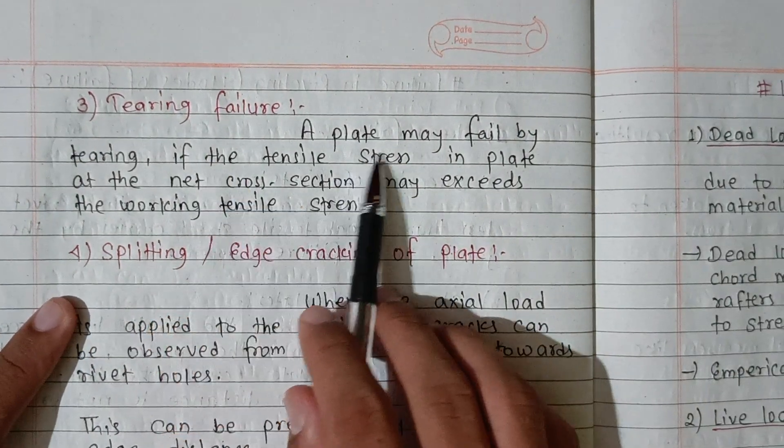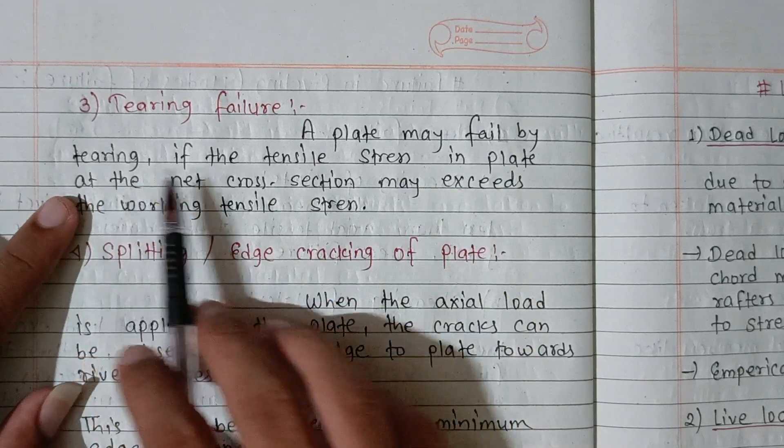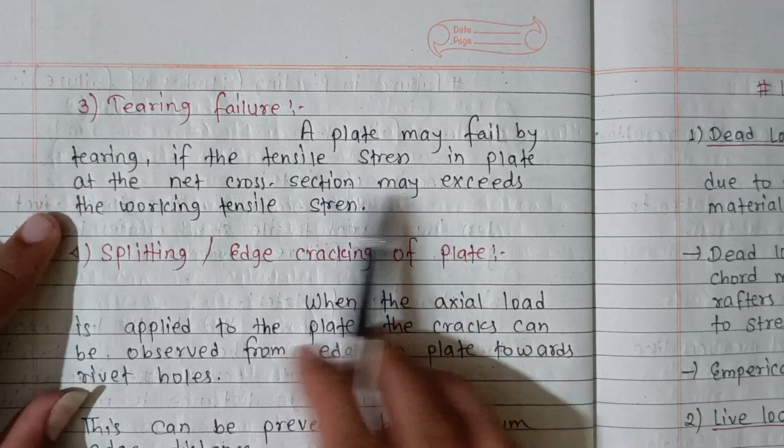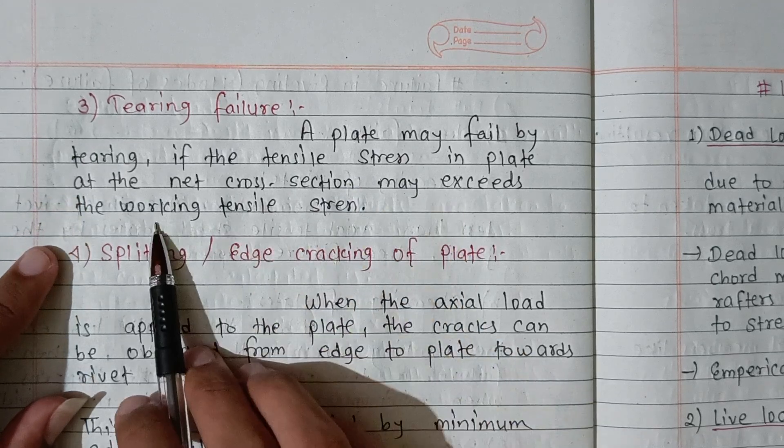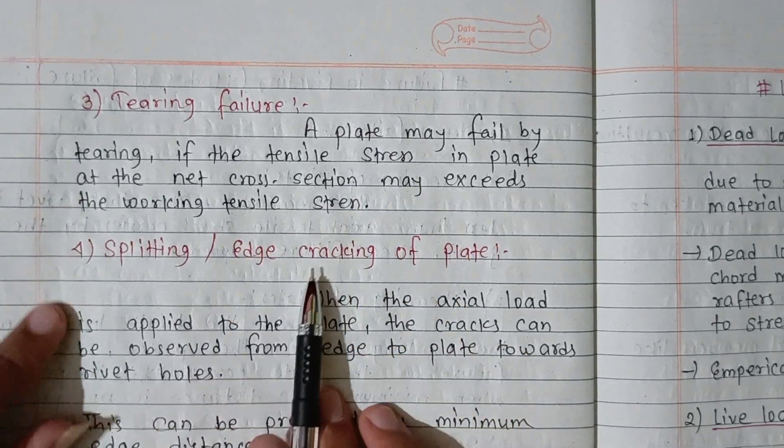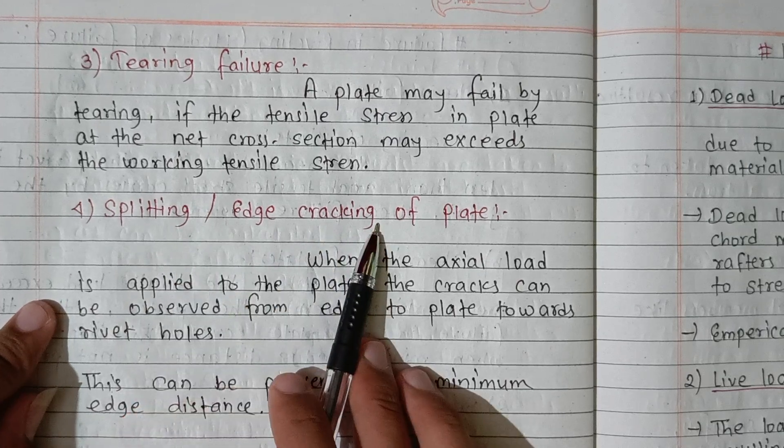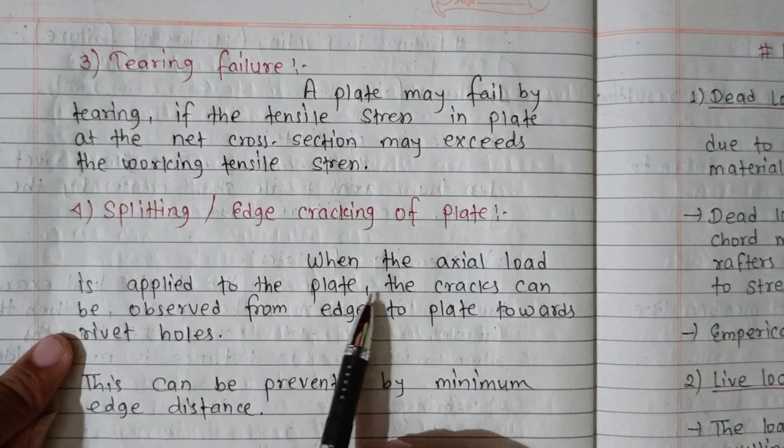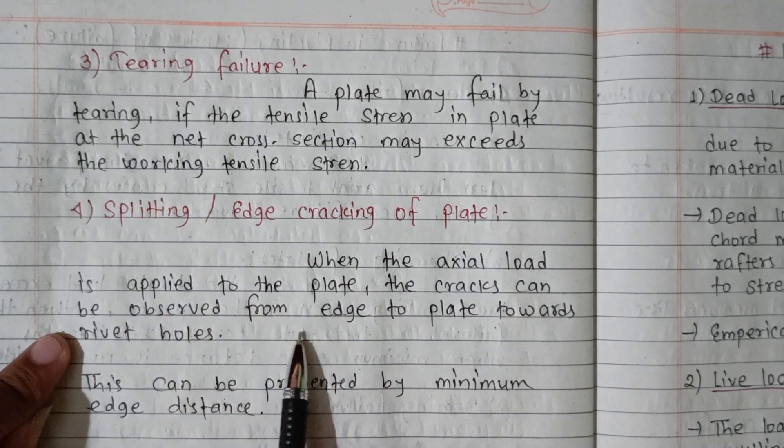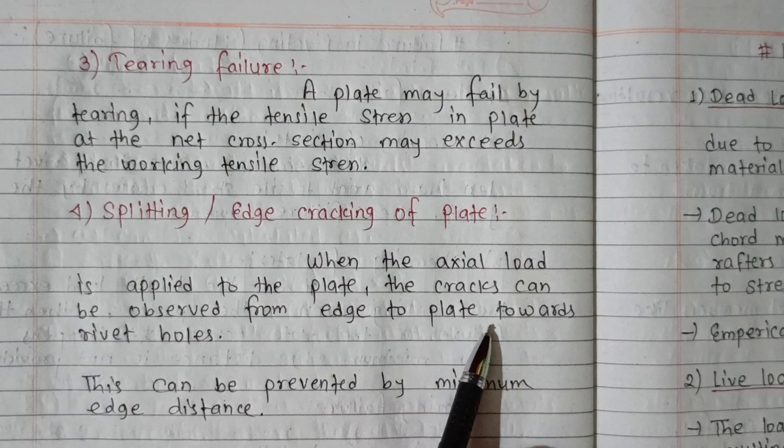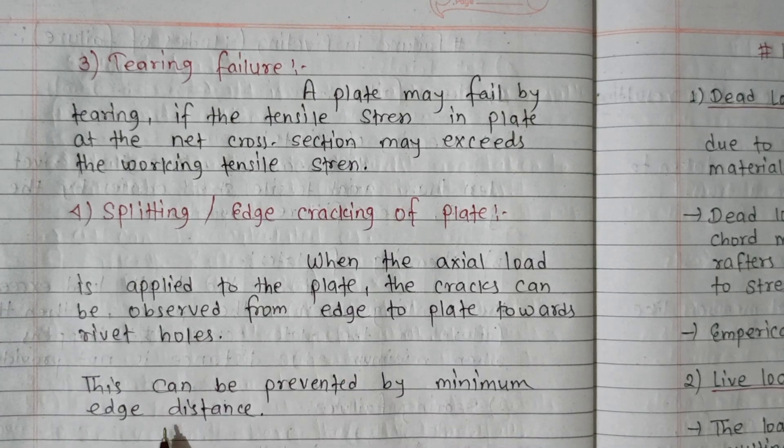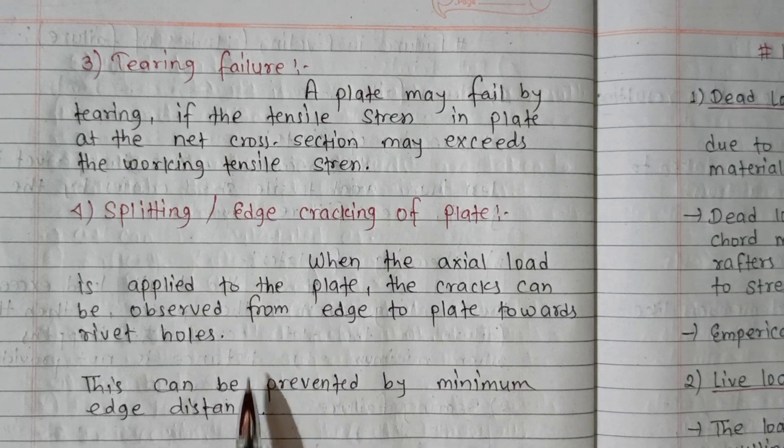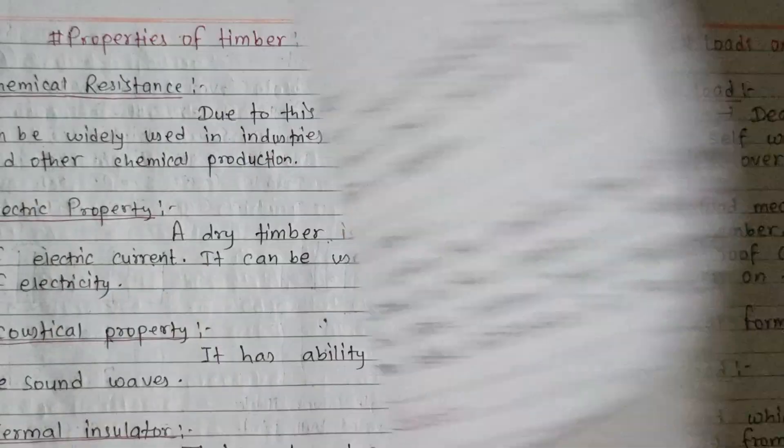Tearing or cracking: a plate may fail by tearing if the tensile stress in a plate at a net cross-section exceeds the working tensile stress. Splitting or cracking of plate on a section when the axial load is applied, the cracks can be observed. This can be prevented by providing minimum edge distance.